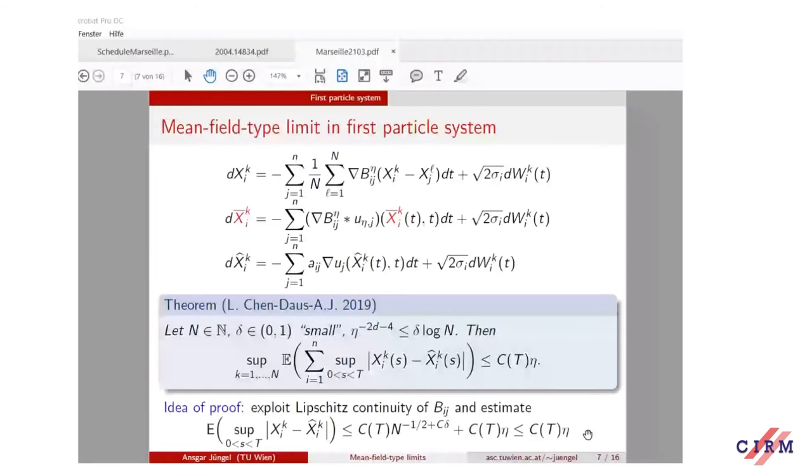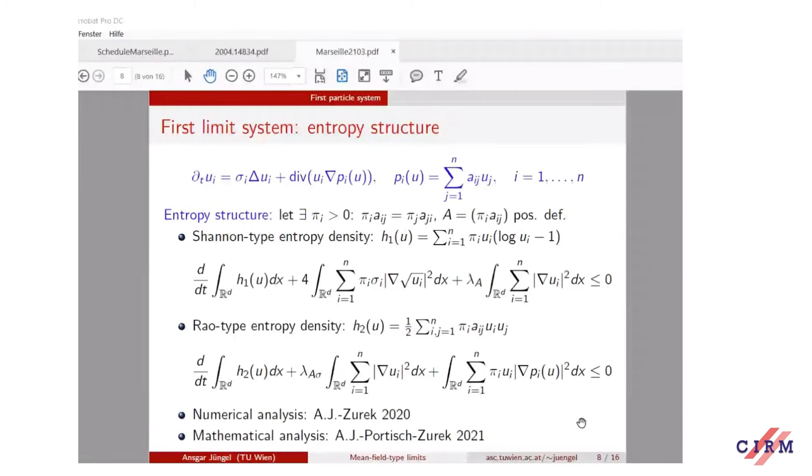Let us consider the limiting system in more detail. Some of you know that I'm interested in the entropy or what I call entropy structure. Let us see what kind of structure we have for the limiting system. First of all, we have such a kinetic theory—we have kind of a Shannon-type entropy density. If I define u in terms of all of them, I have some π_i's, and the π_i's are numbers. I assume they exist and they give that the matrix π_i a_ij is assumed to be positive definite. This assumption I need to impose.